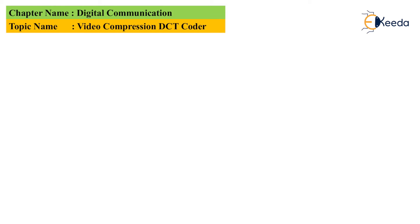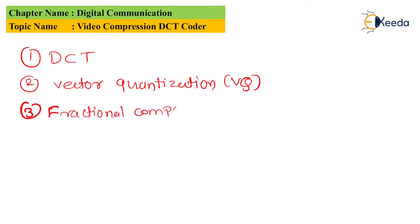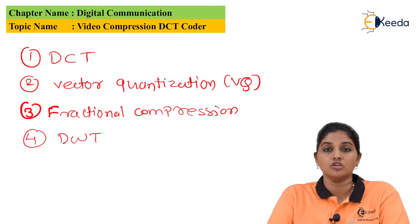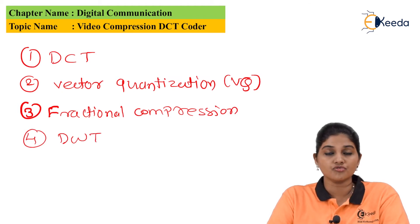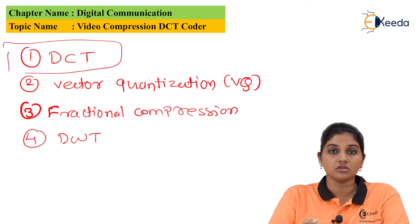There are four methods used for video compression using digital signal processing. The first is DCT — Discrete Cosine Transform. The second is VQ — Vector Quantization. The third is fractional compression. The fourth is DWT — Discrete Wavelet Transform. Out of these four methods, we are going to discuss the first one: Discrete Cosine Transform.